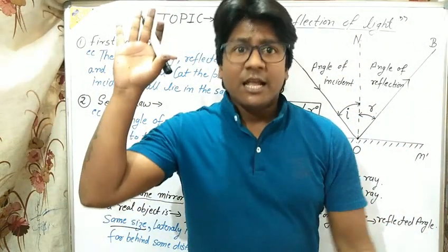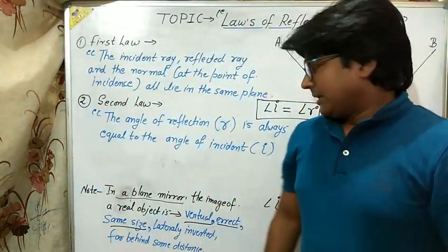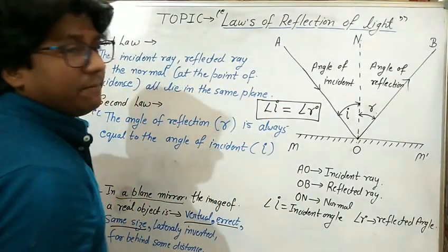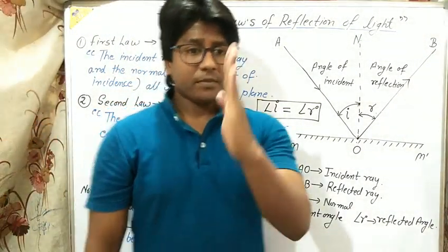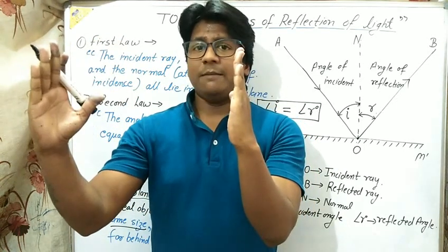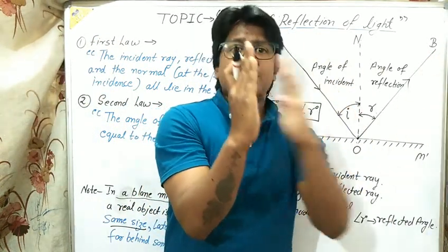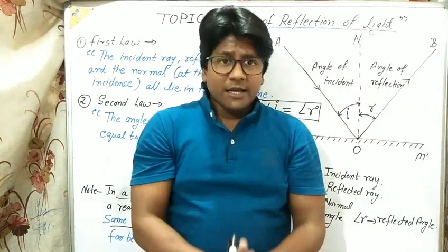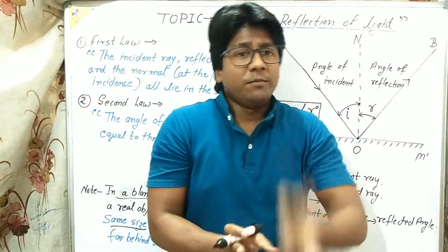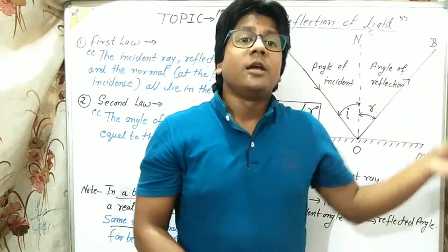You can see that the person in the mirror is lifting his left hand — this is called laterally inverted. And the last characteristic: the image is the same distance behind the mirror as the object is in front. Suppose this is the mirror and a person is standing here — his image will be constructed at the same distance. The distance from the object to the mirror equals the distance from the mirror to the image.